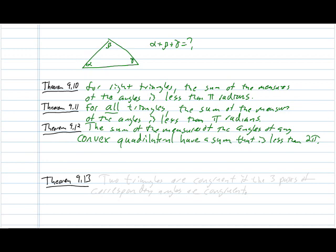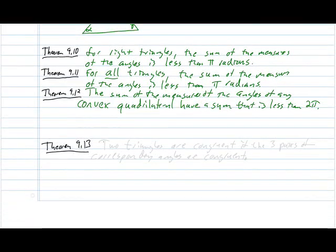Okay. Now, if that wasn't weird enough, theorem 9.13 goes on to say that there is another congruence theorem. Two triangles are congruent if they have three pairs of corresponding angles. And this is really interesting because this is, in Euclidean geometry, a condition for similarity of triangles. So, in hyperbolic geometry, the congruence of the three pairs of angles actually shows that the triangles are congruent.